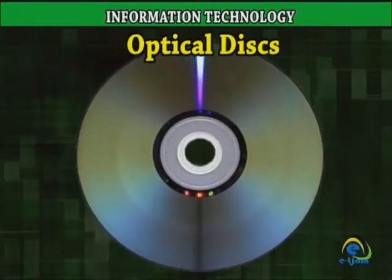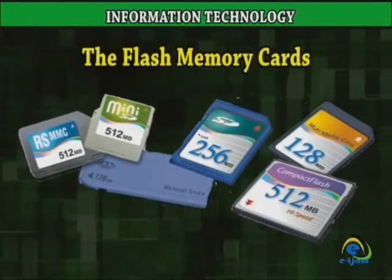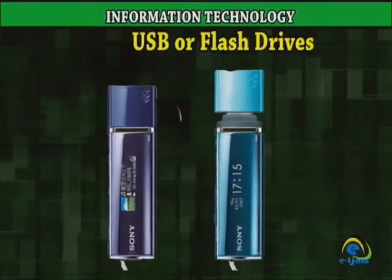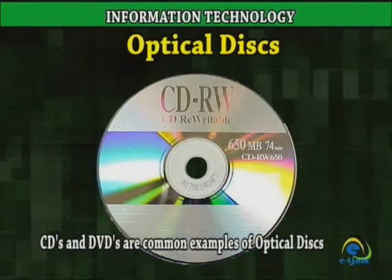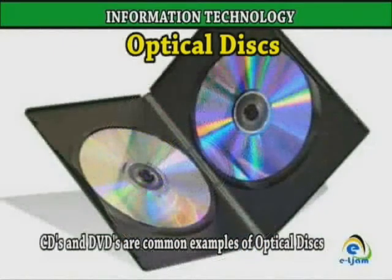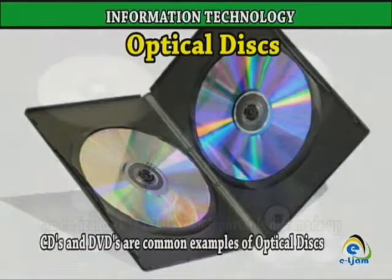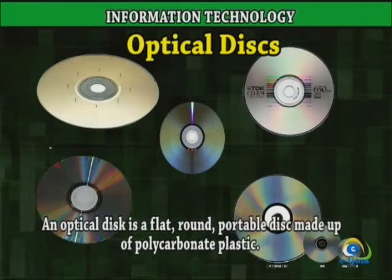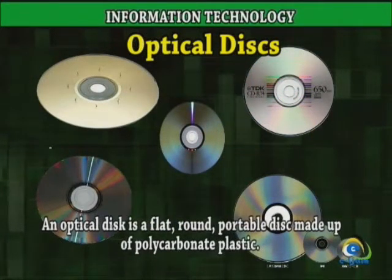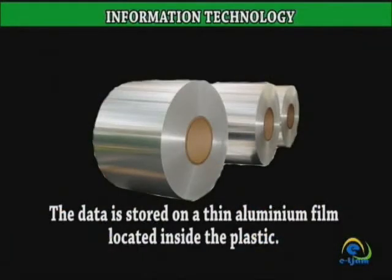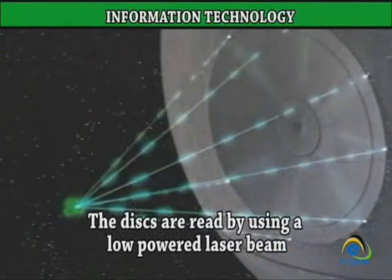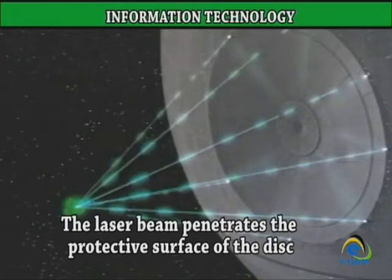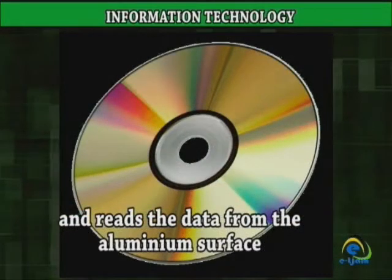Other types of storage media include optical disks, flash memory cards, and USB drives. CDs and DVDs are common examples of optical disks. An optical disk is a flat, round, portable disk made up of polycarbonate plastic. The data is stored on a thin aluminum film located inside the plastic. The disks are read by using a low-power laser beam, which penetrates the protective surface of the disk and reads the data from the aluminum surface.